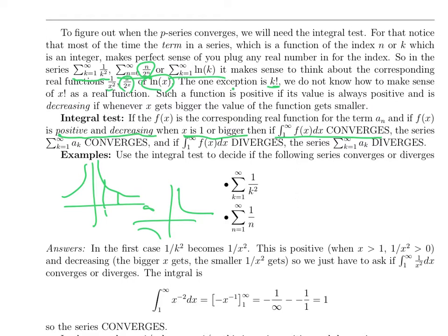So here we replace the sum from 1 to infinity of 1 over k squared with the integral from 1 to infinity of 1 over x squared. Remember that's the same as x to the minus 2. So when we integrate it, we add 1 to the exponent, divide by minus 1. So we get minus x to the minus 1 from 1 to infinity. And that's equal to minus 1 over infinity minus minus 1 over 1. 1 over infinity is 0. That's 1. So the first case converges.